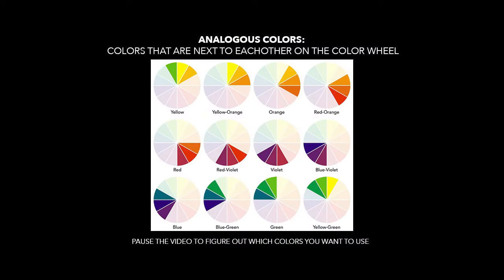So for both of my examples, I used analogous colors, which are colors that are next to each other on the color wheel. Feel free to pause this part of the video to figure out which analogous colors you can use. The main objective is to color your sheets three different values, light, medium, and dark. And if all you had was a single crayon, you could do that.